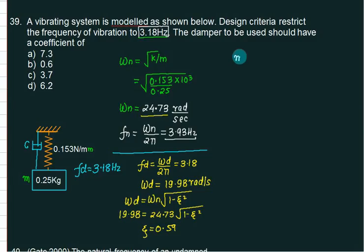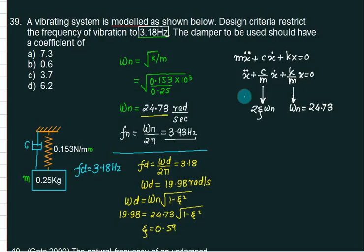Mx double dot plus Cx dot plus Kx equals to 0. So x double dot plus C by M x dot plus K by M into x equals to 0. So now below this, you stretch and now you modify the method. Is it 2 zeta omega N? And this value is known to us. Is it omega N? And is this value is 24.73? So what is 2 zeta omega N? Is it C by M? So 2 zeta is how much? 0.59. What is omega N? 24.73. C divided by. If the mass is known to us, 0.25. C equals. Choice number 1 is correct.